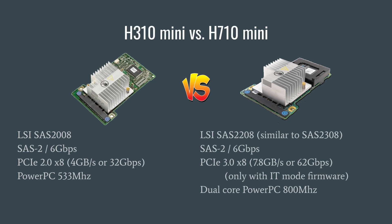Next let's go over the H710 mini with IT mode firmware. The H710 is based on the LSI SAS 2208 chipset but is running the firmware from the SAS 2308 chipset, which are very similar in architecture. This too is a 6 gigabit SAS 2 chipset, but with the IT mode firmware it connects to the system with a PCIe 3.0 x8 connection, which provides about 7.8 gigabytes per second bandwidth, or about 62 gigabits per second. The SAS 2208 is a dual core PowerPC processor that runs at 800 MHz, so it is significantly faster than the SAS 2008.